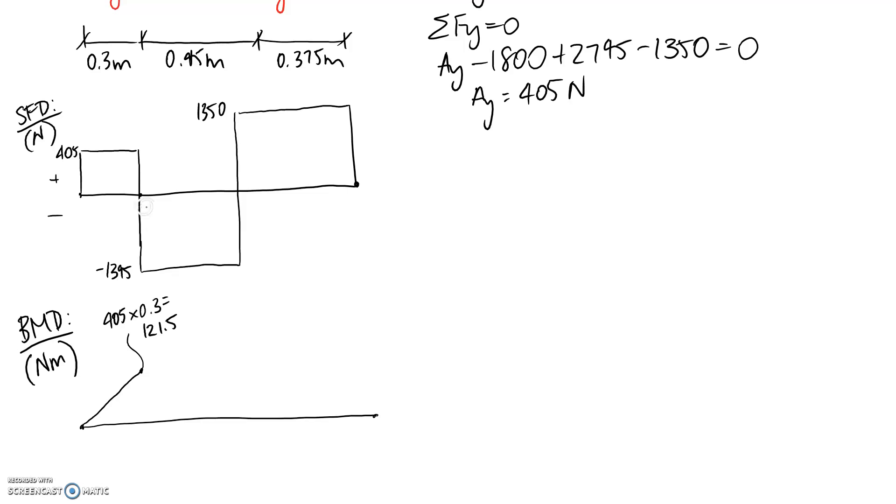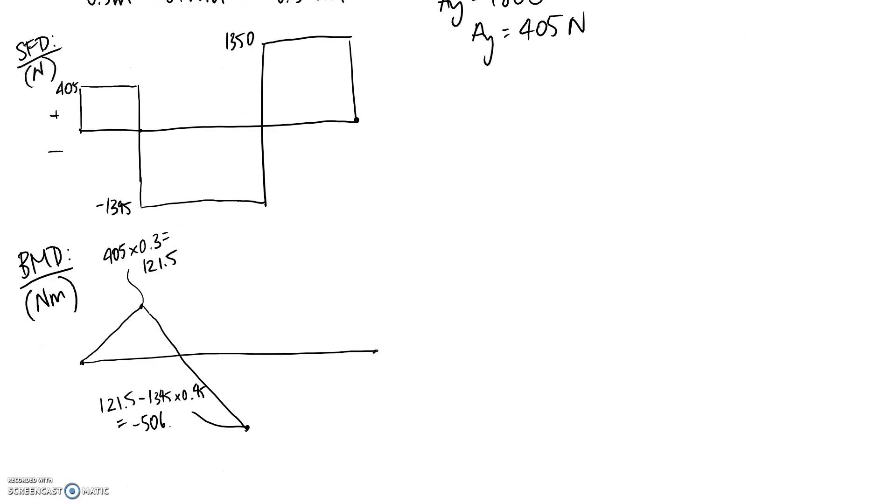So now we can look at this part of our diagram. It's on the negative side, so we would expect it to pull us back downwards, and we can work out how far. So it's going to be where we started, which was 121.5, minus the area in here, which is 1395 times this width. This distance in here should be 0.45, and it ends up being that you have a moment in here of negative 506.25.